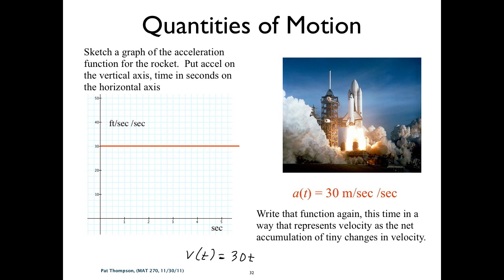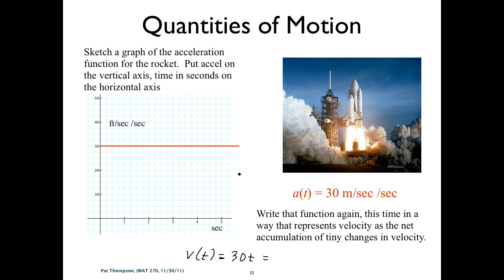Now I want you to write an alternate version of that function — one that represents or expresses the velocity as the accumulation of tiny changes in velocity. Rewrite it in a way that expresses the current velocity as the accumulation of tiny changes in velocity.